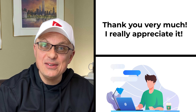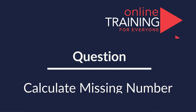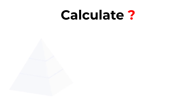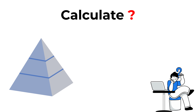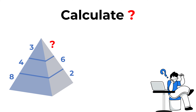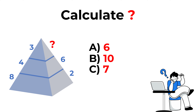Here's a cool question you frequently see on the test. You need to calculate the question mark in a three-layer pyramid. The bottom layer has numbers 8 and 2, the middle layer has 4 and 6, and the top layer has 3 on one side and a question mark on the other. Choices: A) 6, B) 10, C) 7, D) 2.